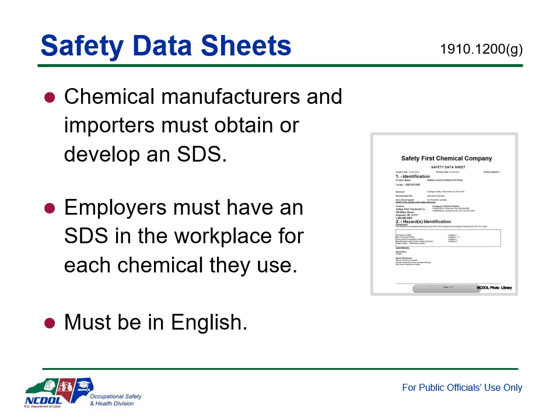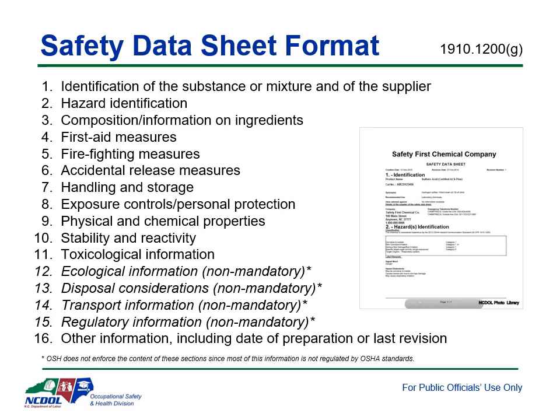Safety data sheets are required to be provided to the employer by chemical manufacturers and importers, and must be maintained up to date. If the chemical changes its formulation, the manufacturer has to update the safety data sheet. If you change your supplier, you must get a new safety data sheet from the new supplier. You must always have a correct and up-to-date version available for your employees. Sections one through twelve of the SDS are enforced by OSHA, while sections twelve through sixteen are enforced by other government agencies.